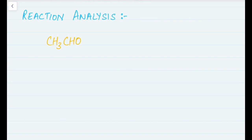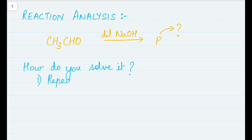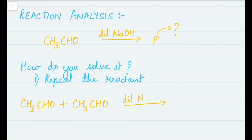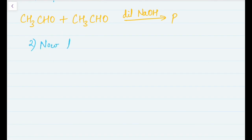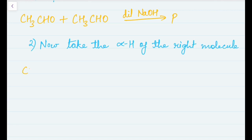Now we move on to the reaction analysis. We'll understand the mechanism of how aldol condensation happens. The question is generally asked as: CH₃CHO in the presence of dilute NaOH — what product do you get? First step: repeat the reactant, so we write the molecule twice. Next step: take the alpha hydrogen of the right molecule. We'll identify one alpha hydrogen separately.